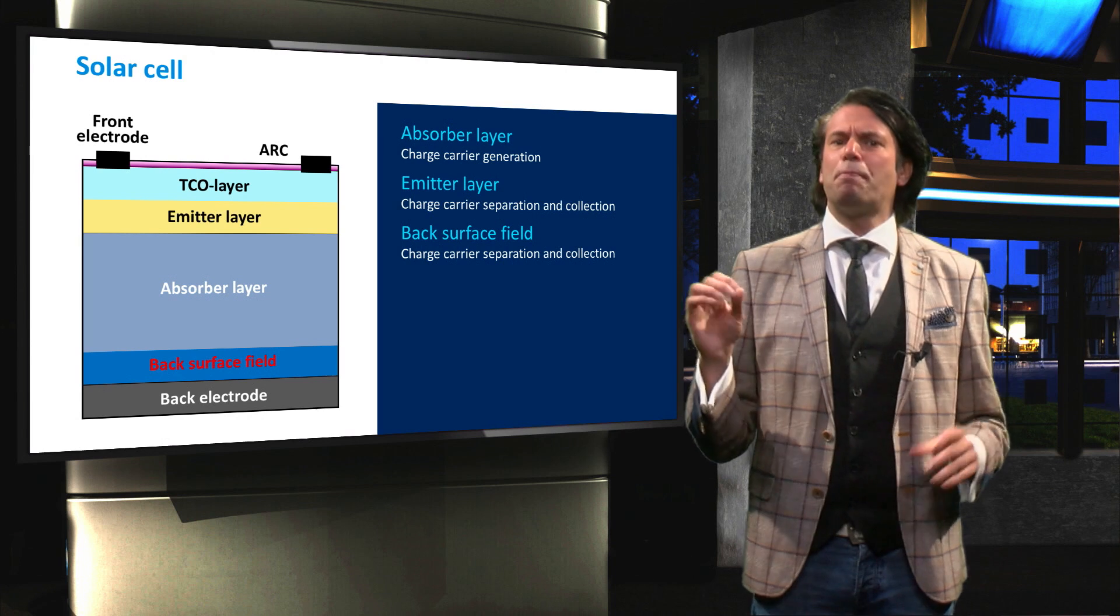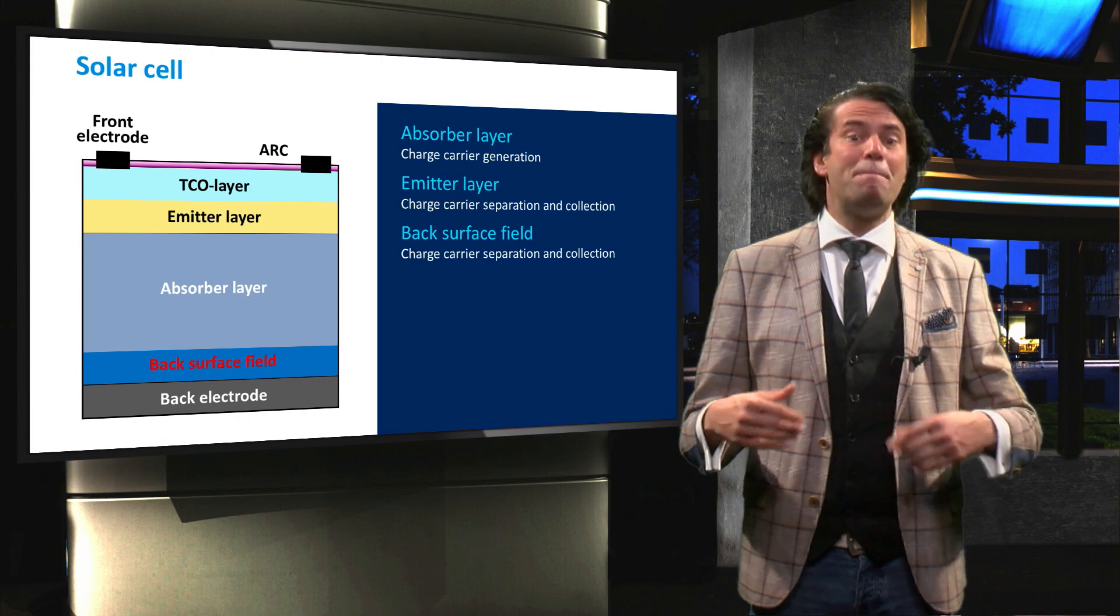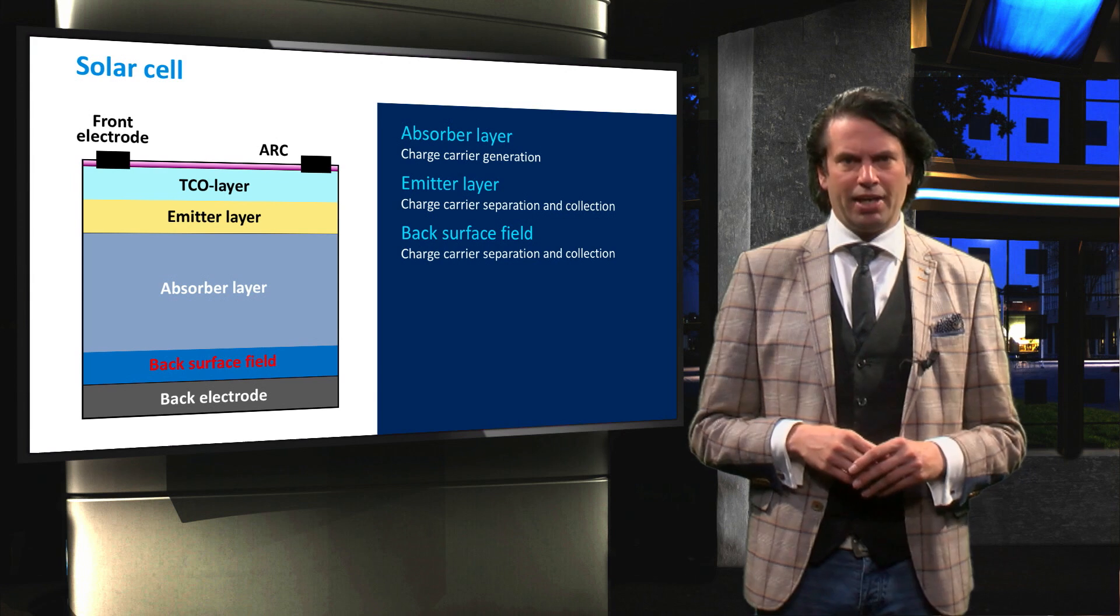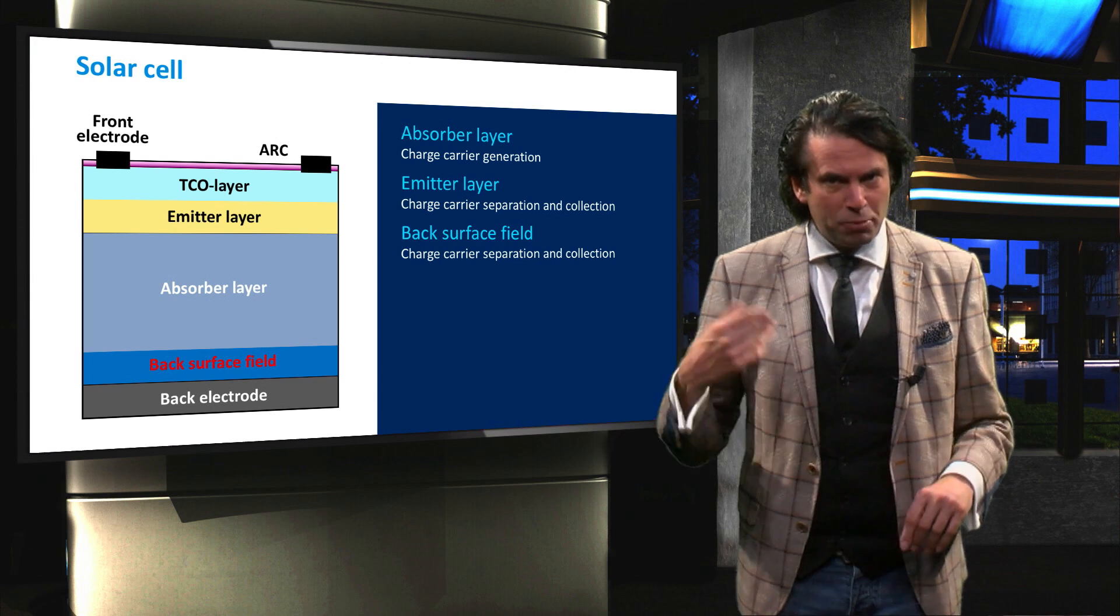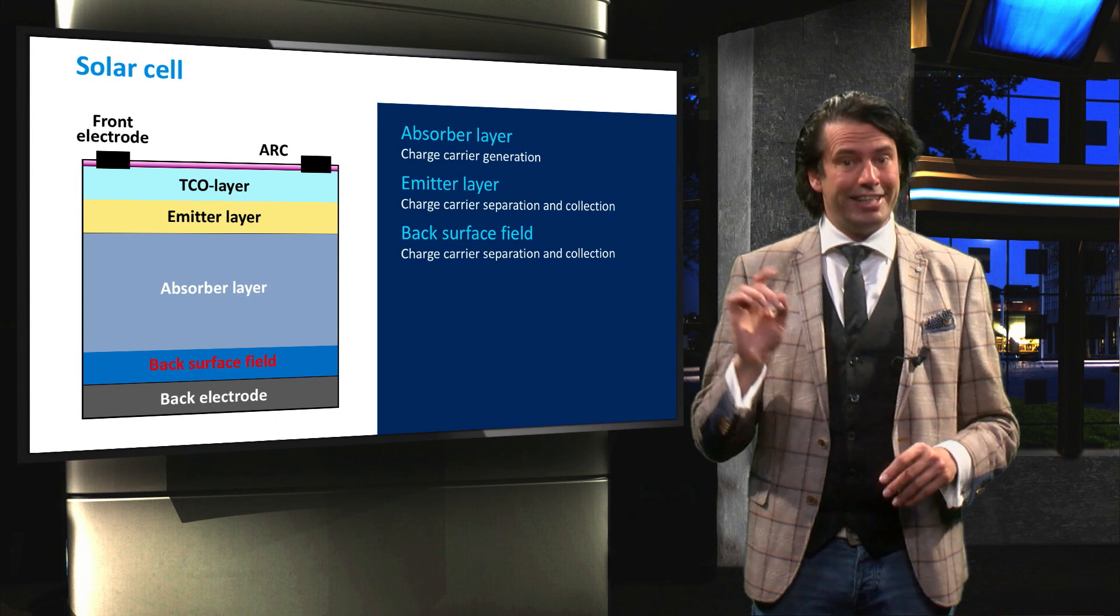Similarly, at the back of the solar cell we have the back surface field, or BSF. This acts as a semi-permeable membrane for majority charge carriers, in this case holes.